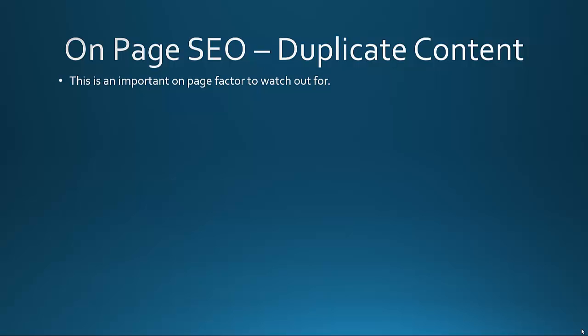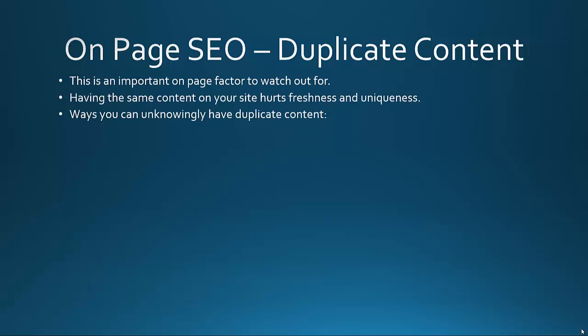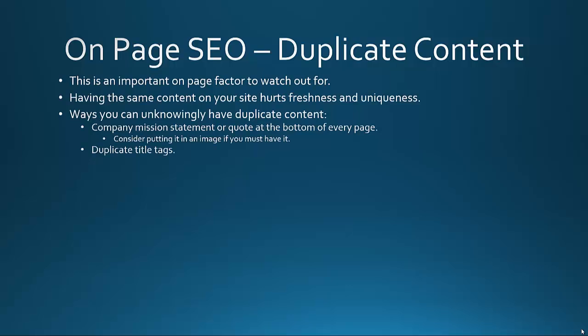Duplicate content is an important on-page factor to watch out for. Having the same content on your site hurts freshness and uniqueness — you want Google to see that you have quality content that's unique and can't be found all over the web. One way you can unknowingly have duplicate content is a company mission statement or quote at the bottom of every page. If you want to have that, put it into an image instead of written content on every page, so you're not applying the same content across all pages of your website.